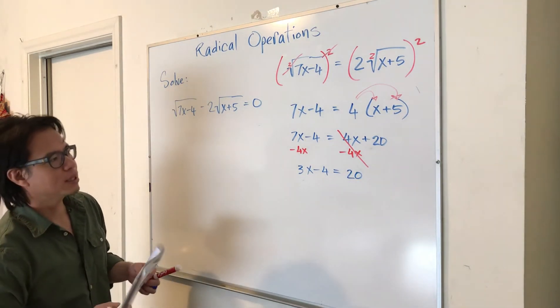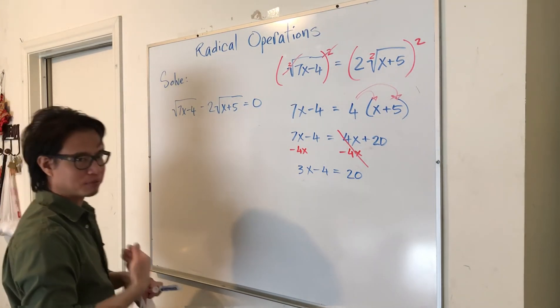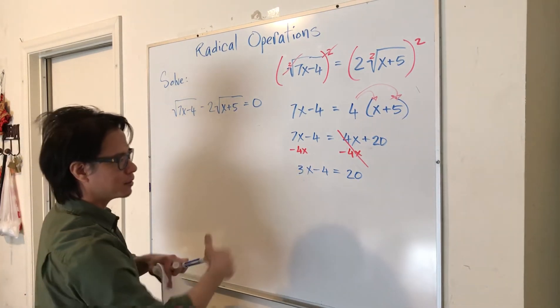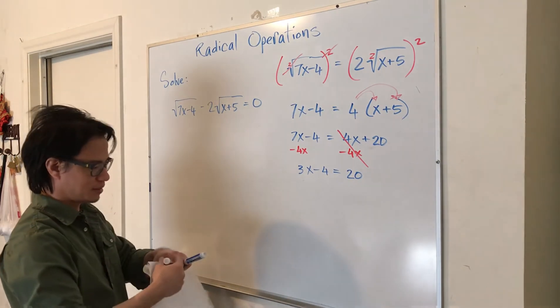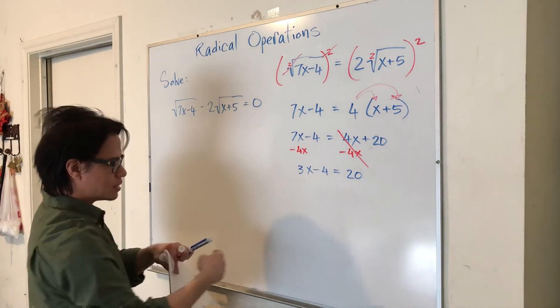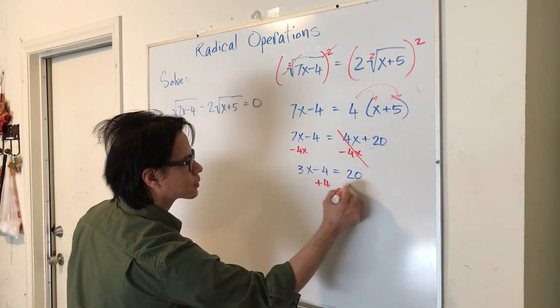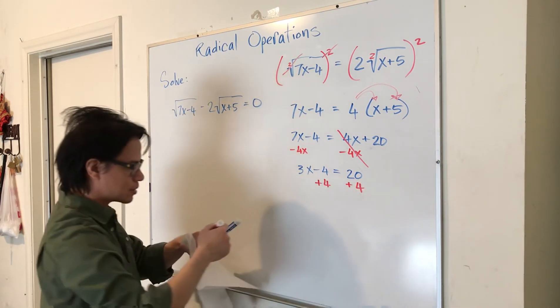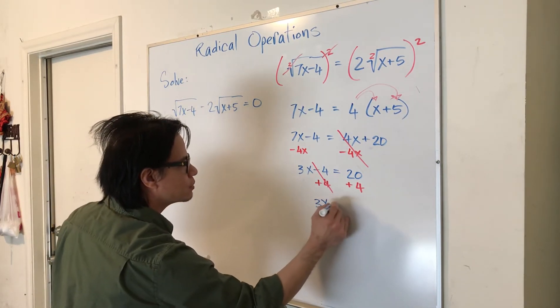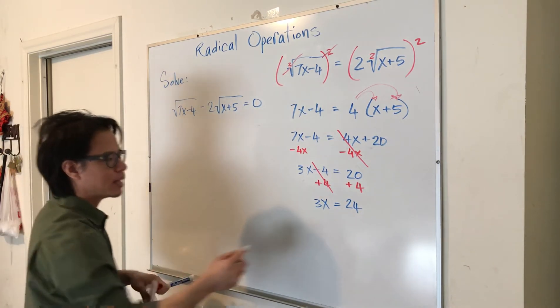So that will make this 7 minus 4 is 3 equals 20. Make sure we have to be careful with our calculations here. Oh I have to be careful with my calculations so I bet you guys are just smiling here, my careless mistake, everyone we all make that once in a while. So let's get rid of the minus 4, what's the opposite of minus 4? Yes let's add 4 to both sides. This cancels out, 3X is equal to 24.